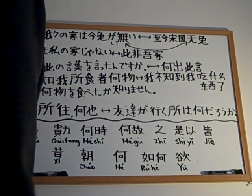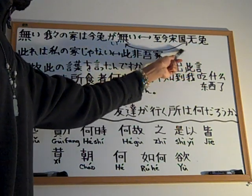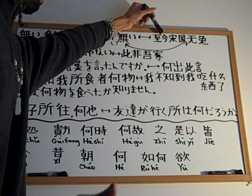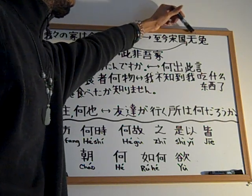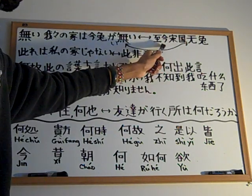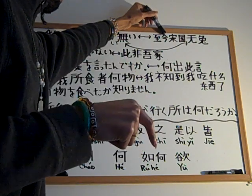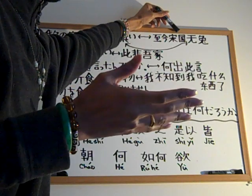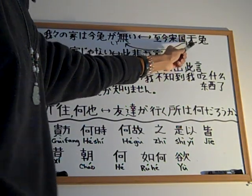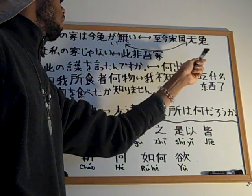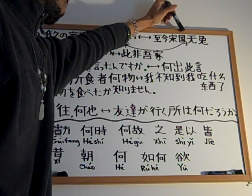Now here I have an arrow because this is the classical Chinese equivalent, from the book. Let me try to read it: 至今宋国无兔 (zhì jīn Sòngguó wú tù). 至今 means 'up to this point,' 今 means 'now,' 宋国 is the Song dynasty, and 无兔 means 'no rabbits.' In simplified Chinese it's written 无, and in traditional it's 無 — same meaning. So it means: 'Up until this point, there are no rabbits in the Song dynasty.'